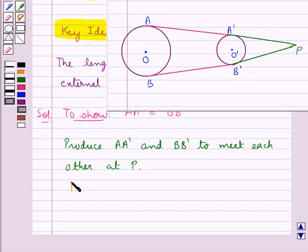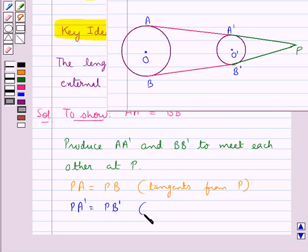Now, we have PA is equal to PB as they are the tangents drawn from the point P. Also, we have PA dash is equal to PB dash as they are also tangents drawn from the point P.